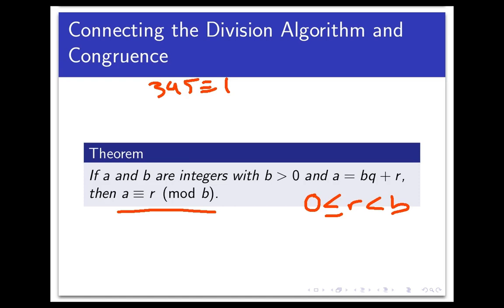For example, we know that 345 is congruent to 1 mod 6, but it's also congruent to a number of other things mod 6. For example, 7 and 13 and negative 5, all these are different by multiples of 6. But 1 is the only integer in that list that's non-negative and less than 6.